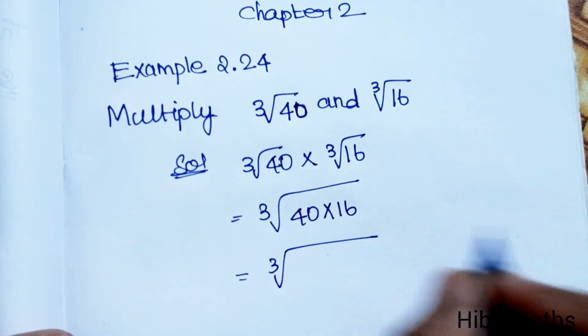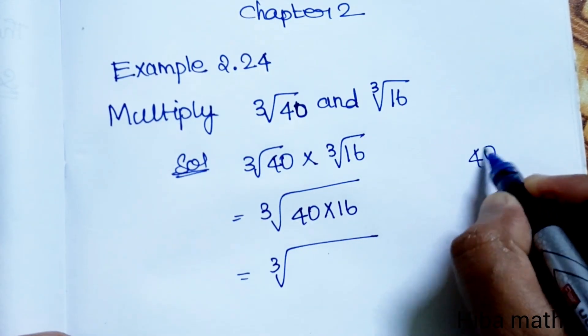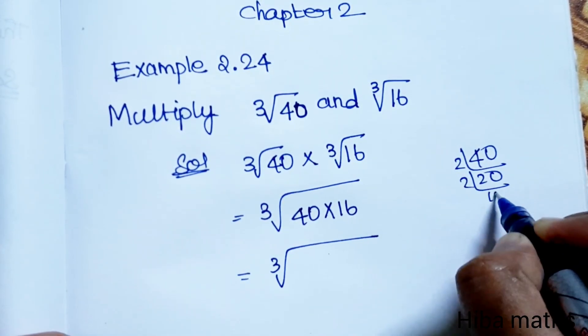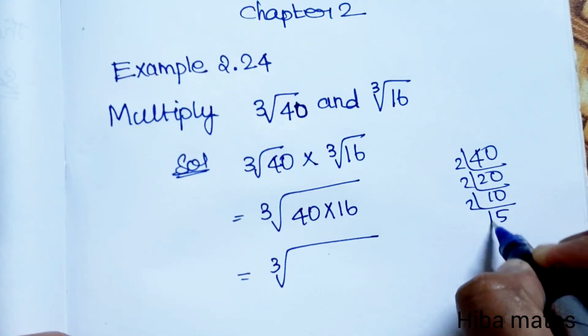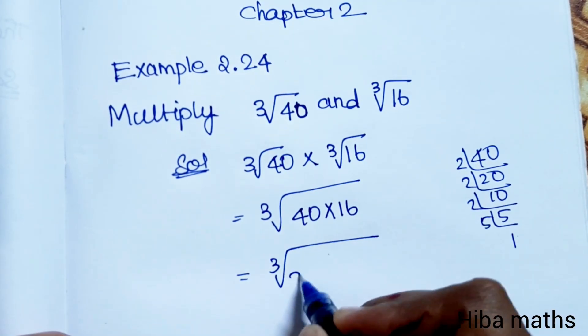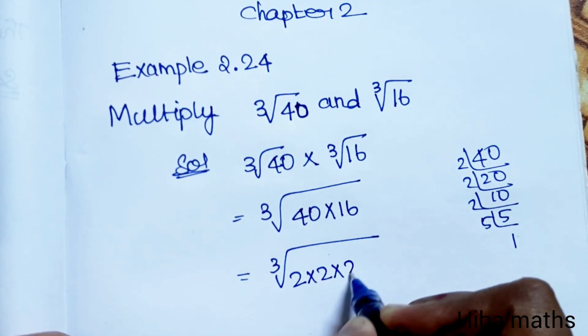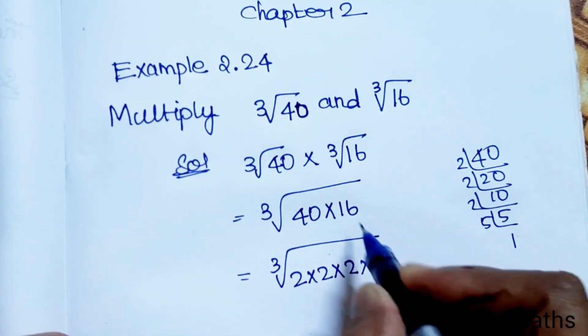Let's do the prime factorization. For 40: 2 times 20 is 40, 2 times 10 is 20, 2 times 5 is 10. So 40 equals 2 into 2 into 2 into 5.